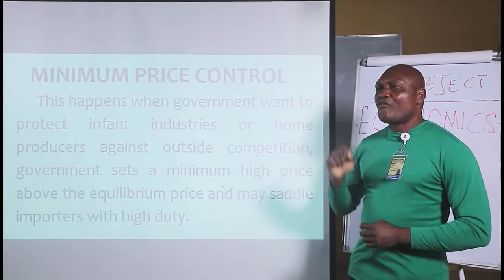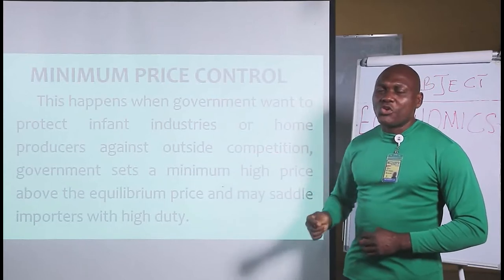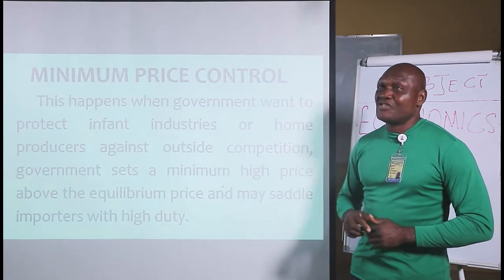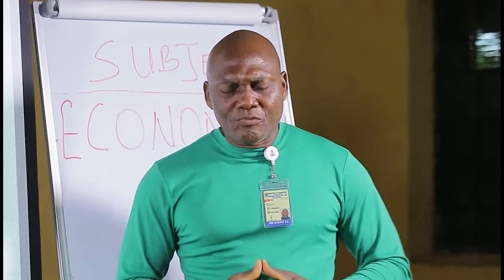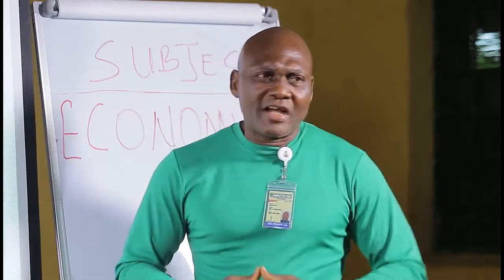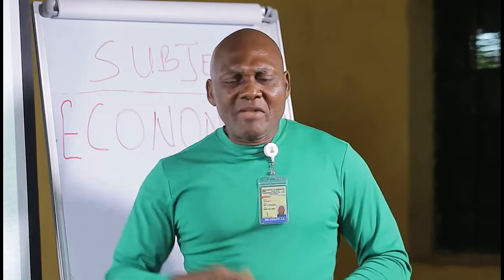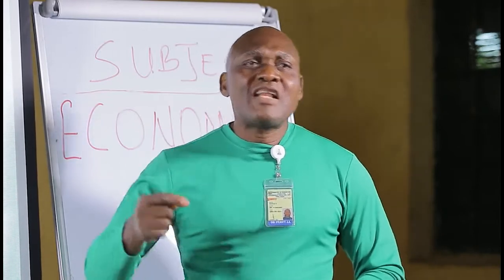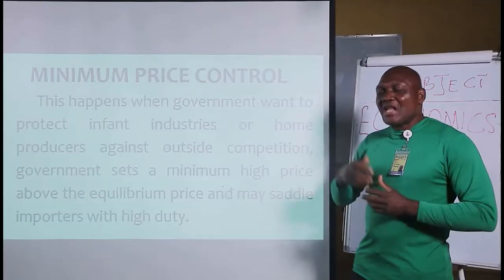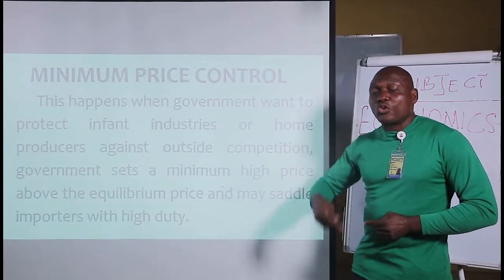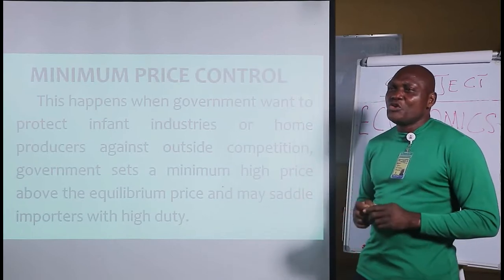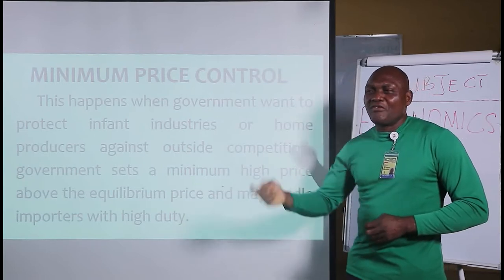When the price is above the market price, it means the price is very high. For example, if a mudu of garri normally sells for 100 naira, government says sell it at 200 naira. This is when government wants to favor producers or protect infant industries — in most exams, we use 'when government wants to protect infant industries.'